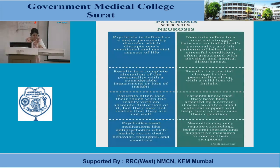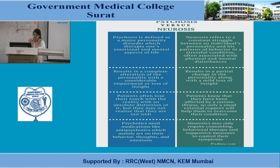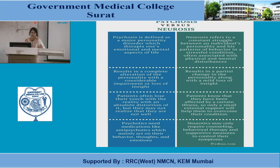What is psychosis versus neurosis? In DSM-5 we no longer use the term neurosis, but it is still taught at the MBBS level. Psychosis is a major disorder that disrupts one's emotional and mental life, resulting in complete alteration of personality with considerable impairment or loss of insight. Patients lose touch with reality and may not realize they are unwell. Psychotics require antipsychotics.